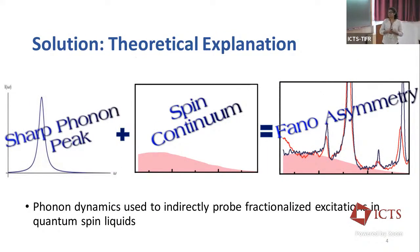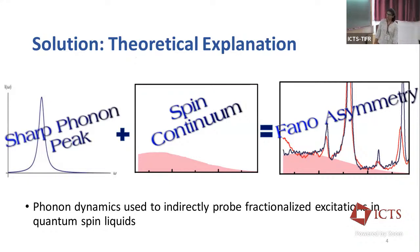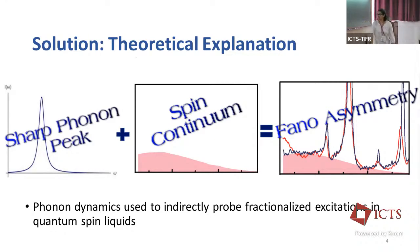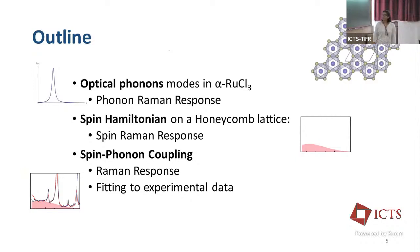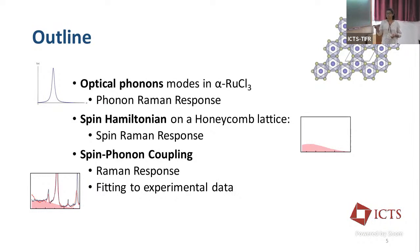The simple theoretical explanation is to use spin-phonon coupling. A sharp phonon peak will interact with a spin continuum, and that will give us this Fano asymmetry. The main idea of my talk is to use phonon dynamics to indirectly probe the fractionalized excitations in these quantum spin liquids. The outline is: first optical phonons, then the phonon Raman response, then the spin Hamiltonian and magnetic Raman response, and finally spin-phonon coupling.